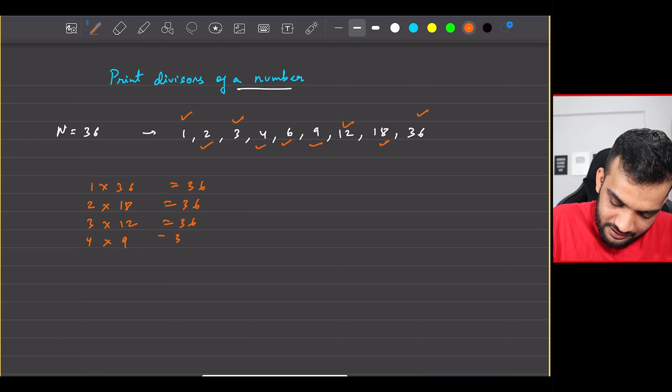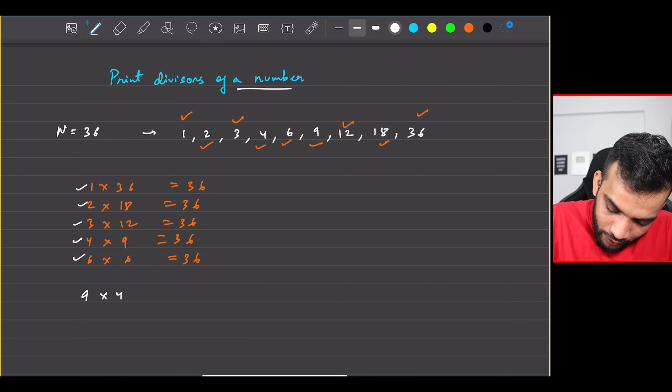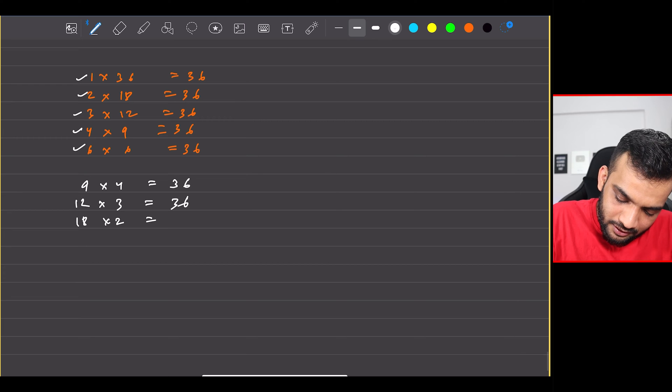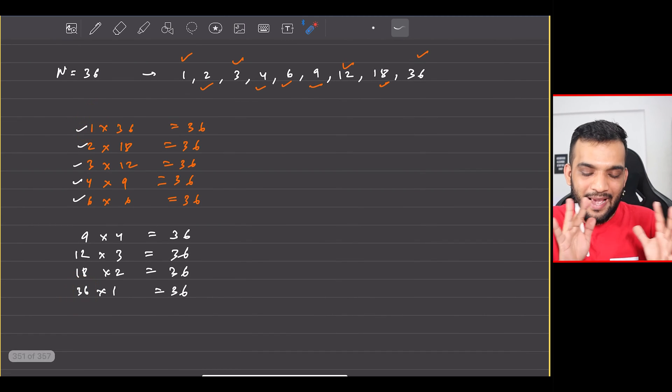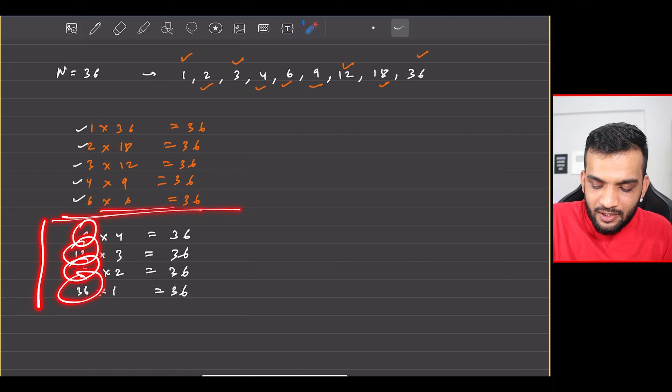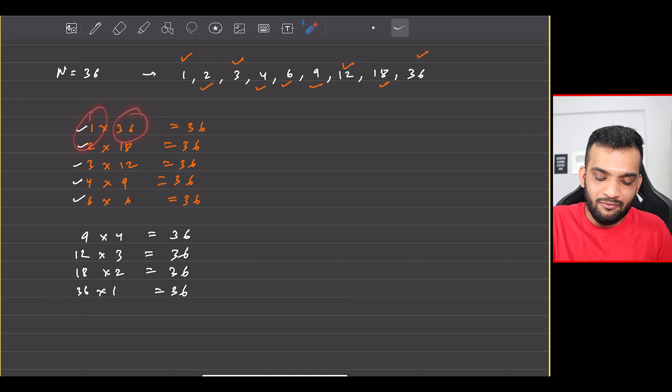Now these are the divisors: one, two, three, four, six. And next divisor is nine. Nine into four is 36. And then twelve into three is 36. Eighteen into two is 36. And 36 into one is 36. So what I was doing was I was looping from one to 36, but actually I don't. For finding nine, twelve, eighteen, thirty-six, I don't need to loop in the second half. If I can just loop till six, my job will be done. Because for one I'll get 36, for four I'll get nine. I don't need to explicitly do for nine.